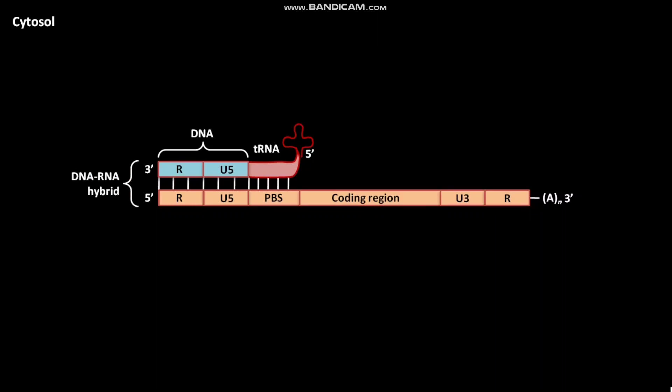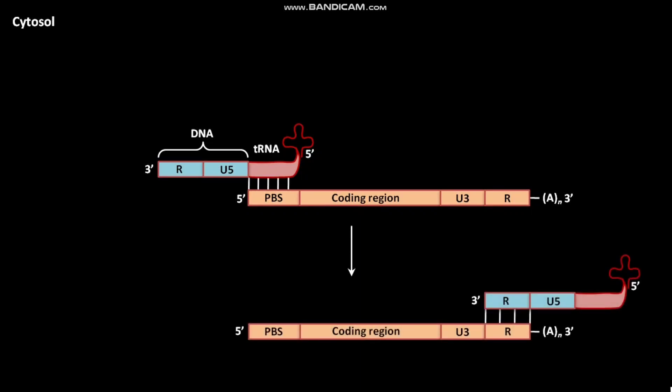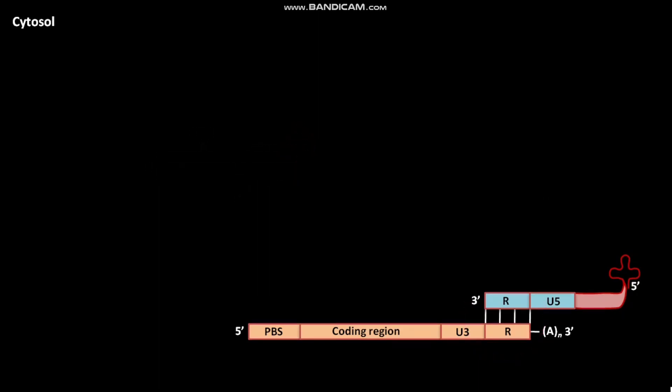The RNA of the DNA-RNA hybrid is then digested. In the next step, the first jump occurs. In this first jump, DNA is hybridized with the remaining RNA-R sequence. DNA strand is then extended from the 3' end.